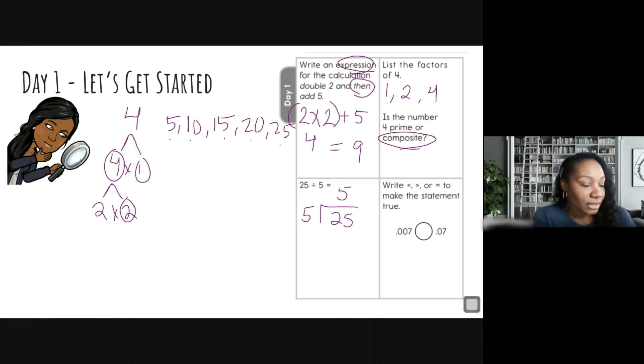All right, the next question says to write less than, greater than, or equal to to make the statement true. Well, right now there is nothing in the blank. Since we're dealing with decimals, I want to list those decimals. So I'm going to write 0.007, or seven thousandths, and 0.07, and I'm going to put another zero there just to make those numbers the same amount of digits. And that's actually seven hundredths.